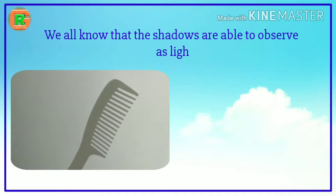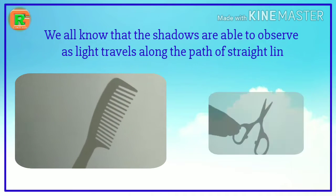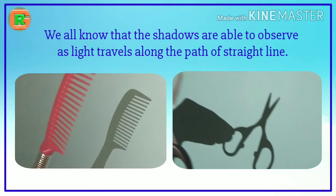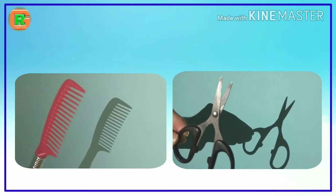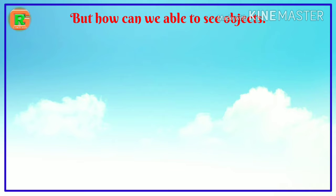We all know that we are able to observe shadows as light travels along the path of a straight line. But how can we able to see objects? Objects which are reflected in the light, they only appear to us. To understand it clearly, observe this conversation.